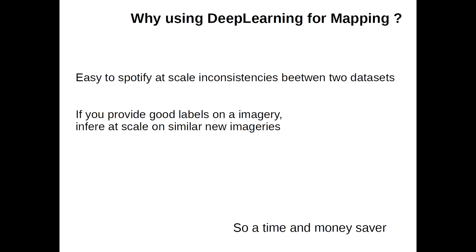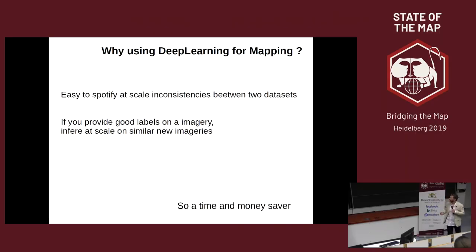So why use deep learning for mapping? It's easy to specify, at scale, inconsistencies between two datasets. And if you provide good labels on imagery, you can infer on a large scale with similar new imagery.